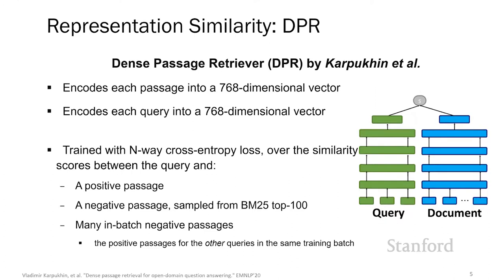Let us delve deeper into a representative and one of the earlier and most popular models among those: the Dense Passage Retriever, or DPR, by Karpukhin et al., which appeared at EMNLP just a few months ago. DPR encodes each passage or document as a 768-dimensional vector, and similarly for each query. During training, DPR produces a similarity score between the query and the positive passage — the relevant passage we want to retrieve — as well as between the query and a few negatives. Some negatives are sampled from the BM25 top 100, and others are in-batch negatives, which are positives for other queries in the same training batch. DPR then optimizes an N-way classification loss with soft cross-entropy over the scores of one positive and all negatives, with the target of selecting the positive passage.